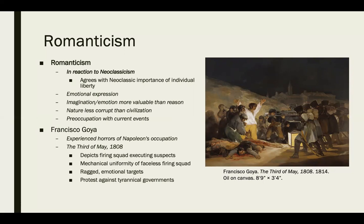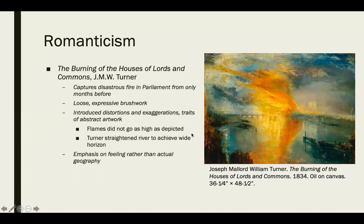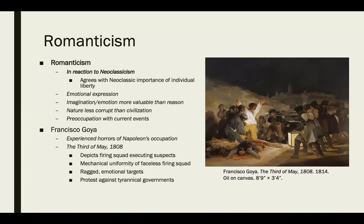Romanticism is our next ism — it's a reaction to neoclassicism. Romantics agree that individual liberty is important, but they're sort of like the Baroque of the Renaissance, with a lot more emotional expression. Imagination and emotion are considered more valuable than reason. They also believe nature is less corrupt than civilization, and there's a preoccupation with current events, with more abstraction and more liberty for the artist.